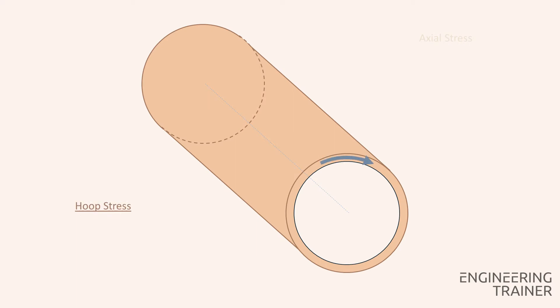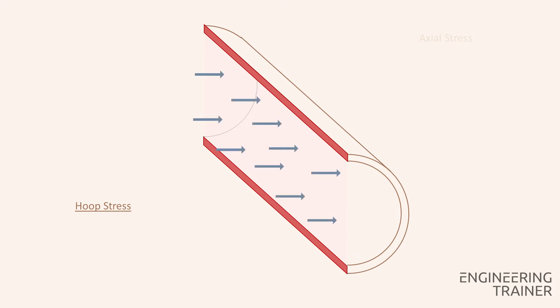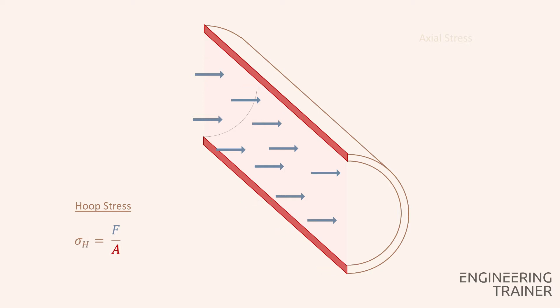Let's have a closer look at the hoop stress first. The pressure forces on the inner wall have components perpendicular to the plane of our cross section and the total force is balanced by the stress in the material. This stress can be calculated by dividing the force F by the area A. In this case we're evaluating the hoop stress sigma H. The force F can be calculated by multiplying the pressure load P times the cross-sectional area of the inside of the pipe A_P, in which A_P is formed by the pipe inner diameter and the length of the pipe piece.